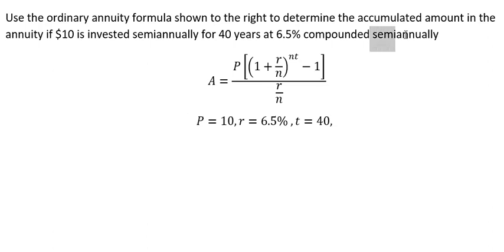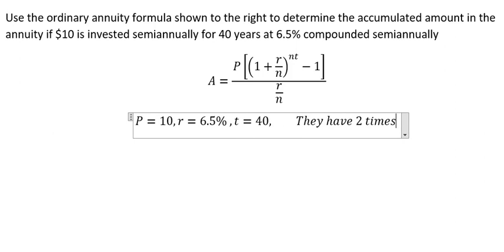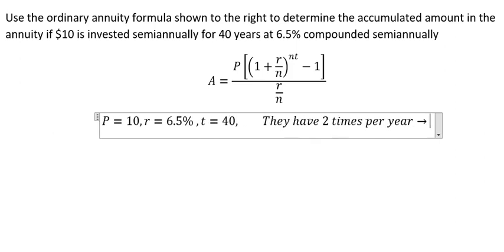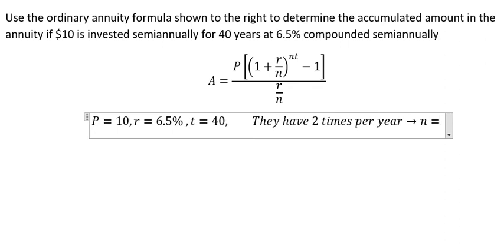We know that this is semi-annually. That means they have two times per year. So in this situation, N equals 2.